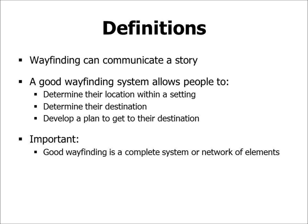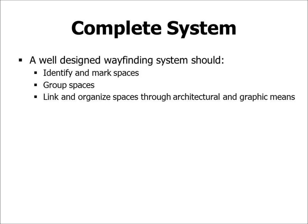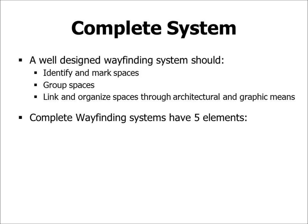Importantly, good wayfinding is a complete system or network of elements. A well-designed wayfinding system should identify and mark spaces within your community, group spaces, and link and organize spaces through architectural and graphic means. Complete wayfinding systems have five elements. The first are paths, which can be roads, sidewalks, or some other linkage within your community that people use to travel.